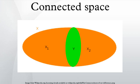Formal definition: a topological space X is said to be disconnected if it is the union of two disjoint non-empty open sets. Otherwise, X is said to be connected. A subset of a topological space is said to be connected if it is connected under its subspace topology. Some authors exclude the empty set as a connected space, but this article does not follow that practice.